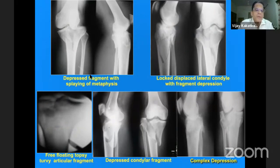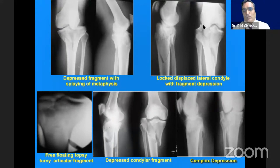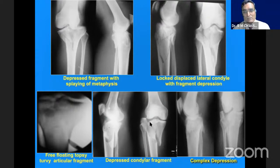There is a depressed fragment with splaying of the metaphysis. This is a quite common variety, and in this type the lateral meniscus may often be found entrapped. At times we find a typical variety where there is a locked lateral condyle — if you try to do reduction, it doesn't come. We have to manipulate this fragment back into position by a dura elevator, and we may have a complete or complex depressed fragment.